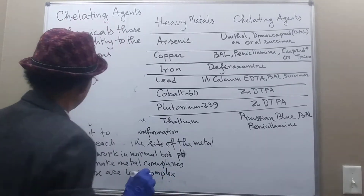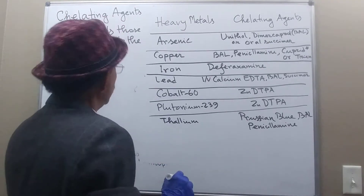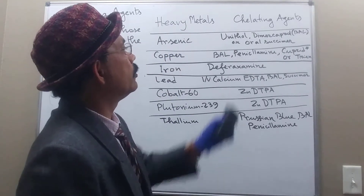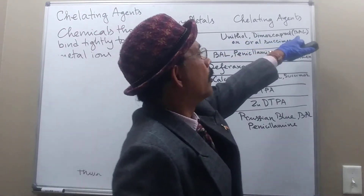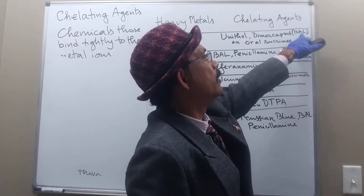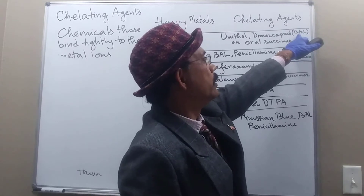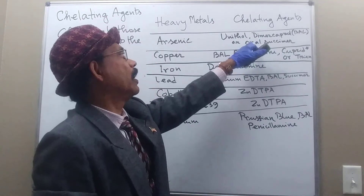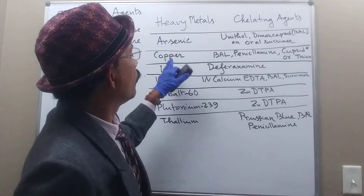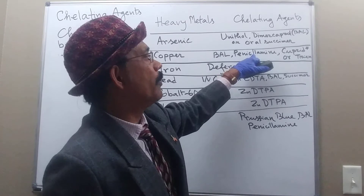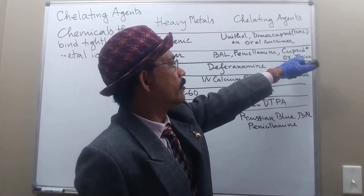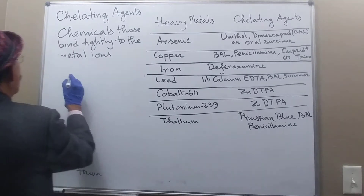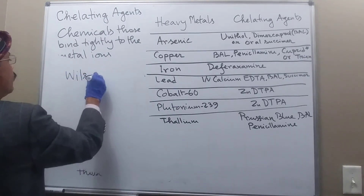Now we discuss some common chelating agents. For arsenic, a heavy metal, the chelating agent is dimercaprol or BAL — British Anti-Lewisite — which was discovered during the Second World War. Oral succimer is especially used for children or persons who cannot take other medication, and may be an alternative. For copper, BAL and penicillamine are most commonly used, as well as cupramine or trientine.